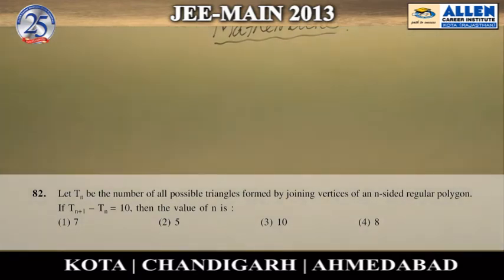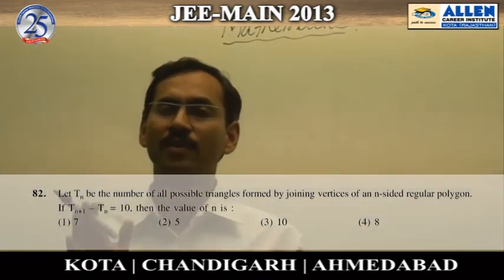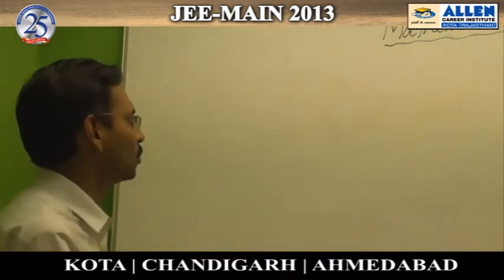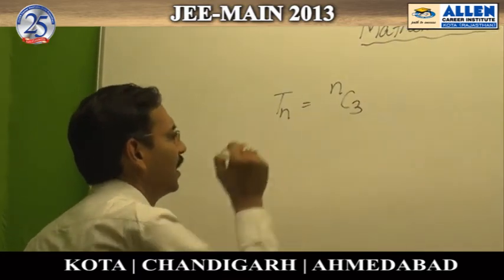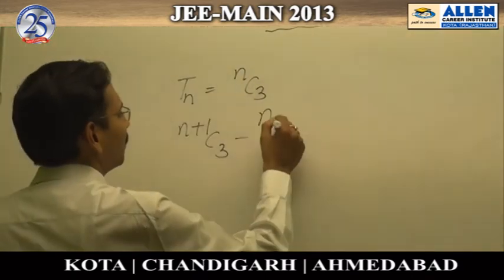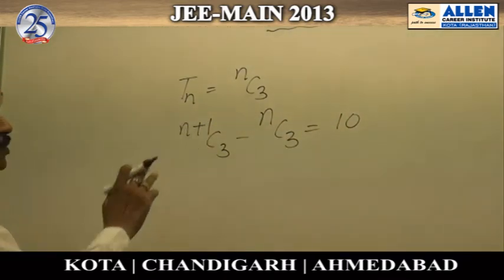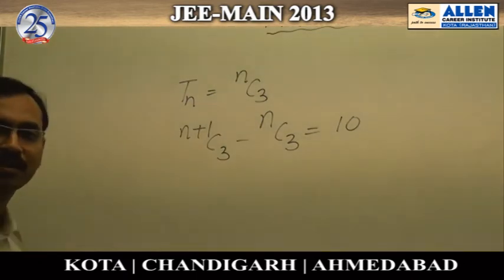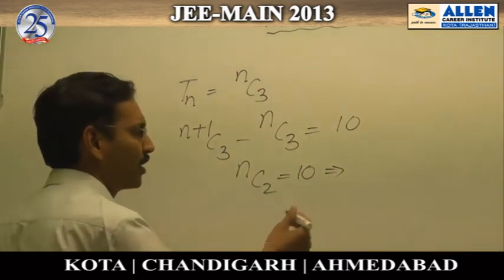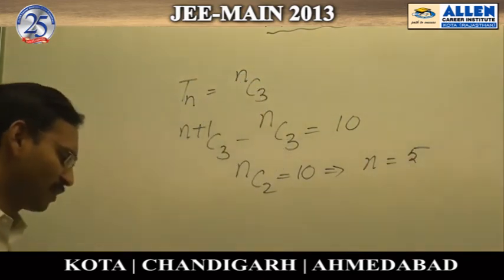In question number 82, we have to calculate Tn, the number of possible triangles. For an n-sided regular polygon where no 3 points are collinear, every selection of 3 points gives a unique triangle. So Tn equals nC3. The equation Tn+1 minus Tn equals 10 becomes (n+1)C3 minus nC3 equals 10, which simplifies to nC2 equals 10 using the identity nCr plus nC(r-1) equals (n+1)Cr. Solving this simple quadratic gives N equals 5, so our answer is option 2.